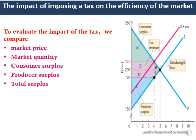To see the impact of imposing a tax on market efficiency, let's look at the graph. The demand curve D shows the marginal social benefit and supply curve S shows the marginal social cost. To evaluate the impact of taxes, we need to compare the values of these variables before and after imposing the tax. These variables are: market price, market quantity, consumer surplus, producer surplus, and total surplus.